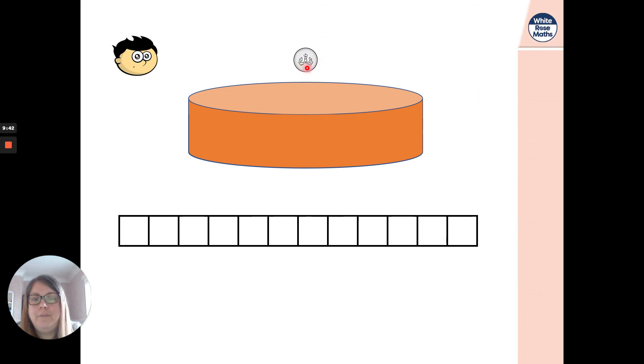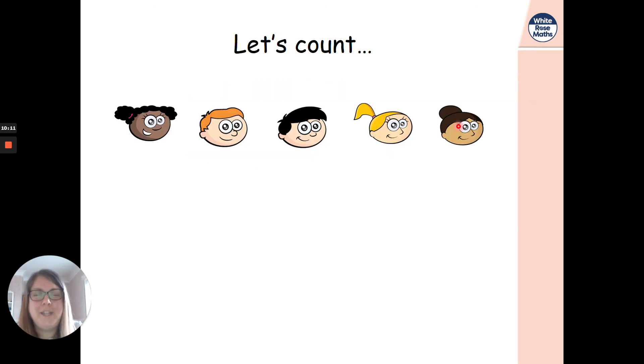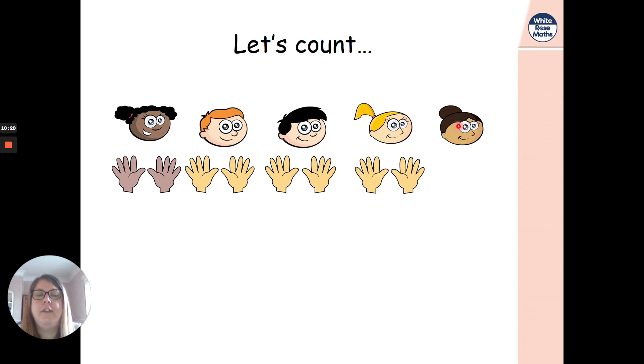Right. Every time this 5p goes into the pot, I want you to count in fives. Are we ready? 5, 10. I'm not going to do it anymore. You're going to do it. I'm going to keep quiet. Did you get 40? I forgot I moved on there, didn't I? I hope you did. So let's count together. Are we ready? 5, 10, 15, 20, 25, 30, 35, 40, 45, 50. Okay. So we had 50 fingers there, didn't we? Because we counted in fives. Well done.